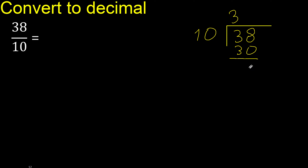Subtract: 8. There is no number that goes down. Therefore, complete. Always complete with 0. Here, place the point — point only once.